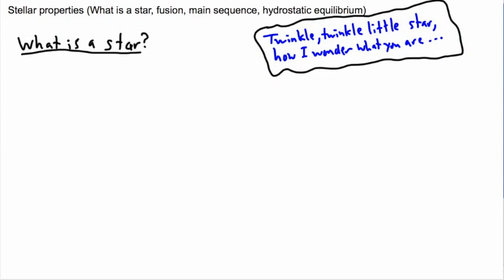Here we're going to be looking at some of the properties of stars. We're going to start off by looking at what is a star, and we're going to talk about what fusion is and what main sequence means, and a little bit about hydrostatic equilibrium.